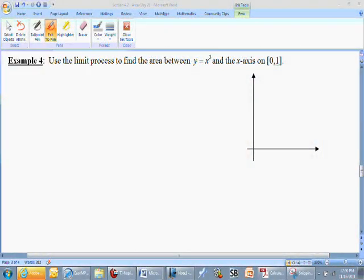Hello once again AP Calculus students, we're still talking about section 4.2 in the Larson textbook, finding the area under the curve. Our focus is on the limit process, and example 4 is asking us to find the area that lies between the curve y equals x cubed, the x-axis, on the interval from 0 to 1.